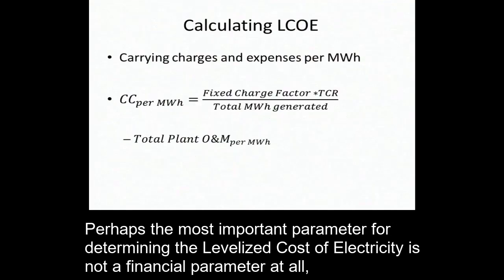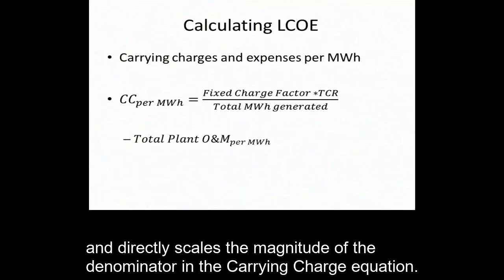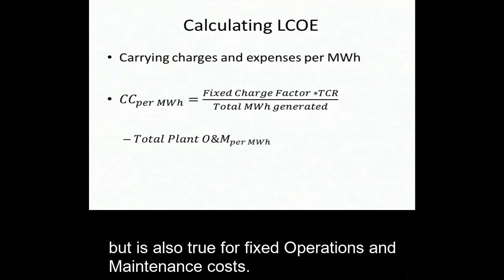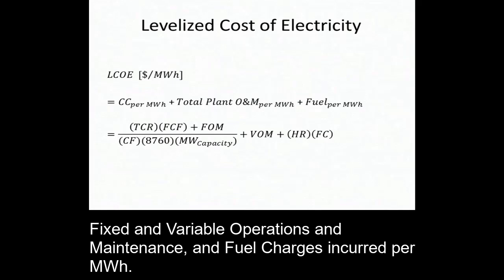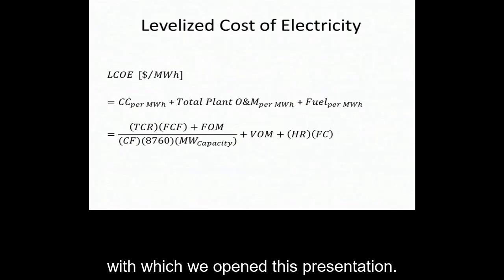Perhaps the most important parameter for determining the levelized cost of electricity is not a financial parameter at all, but rather the plant's capacity factor. The capacity factor determines the amount of megawatt hours produced each year and directly scales the magnitude of the denominator in the carrying charge equation. This direct scaling is the case for distributing the carrying charges per megawatt hour, but is also true for fixed operations and maintenance costs. Finally, the levelized cost of electricity can then be calculated by summing the carrying charges, fixed and variable operations and maintenance, and fuel charges incurred per megawatt hour. We have now come full circle since this is simply another way of expressing the same equation with which we opened this presentation.